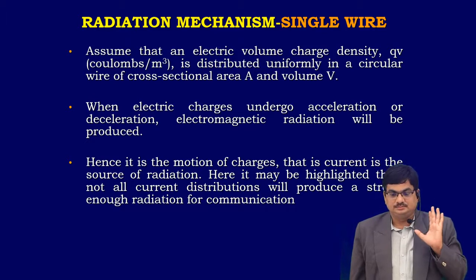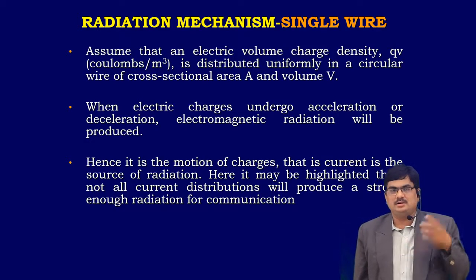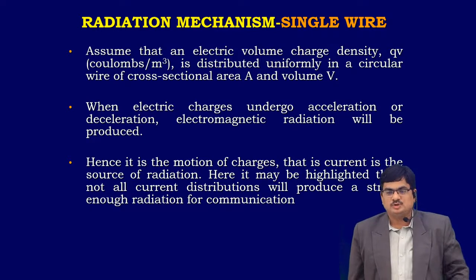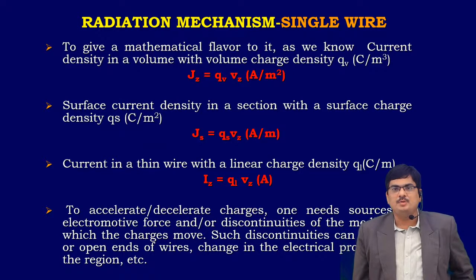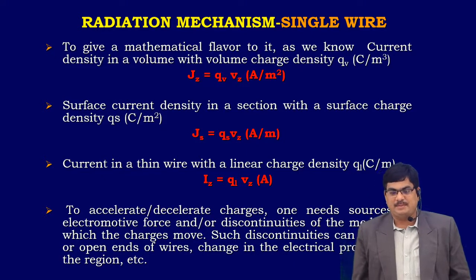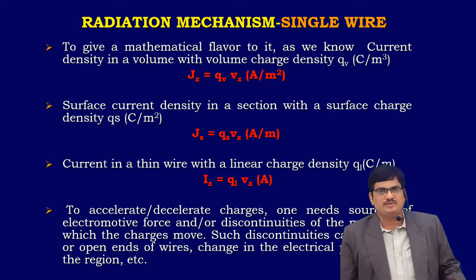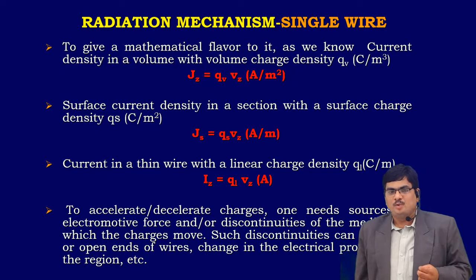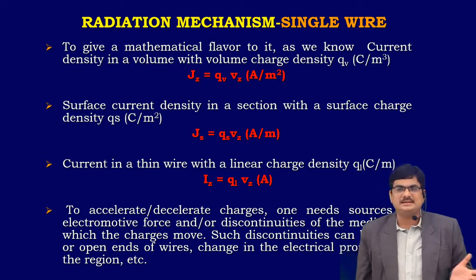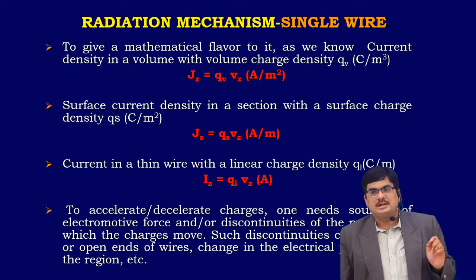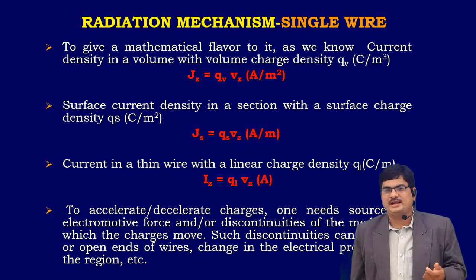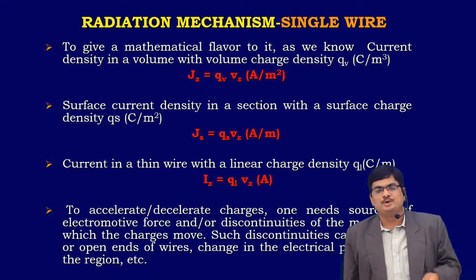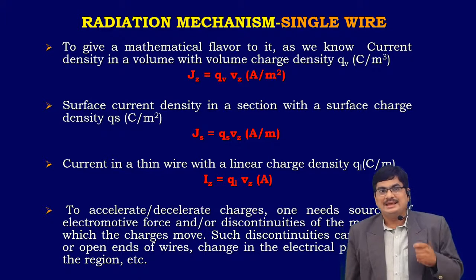To give a simple mathematical treatment: the current density Jz in a volume with volume charge density equals Q times V divided by Vz, in amperes per meter cube. The surface density Js equals Qs times Vz, in amperes per meter. The current in a thin wire with line charge density Iz equals Q times V divided by Vz. Taking the time derivative of both sides, dI/dt equals the charge Q times dv/dt — that is the accelerated charge.